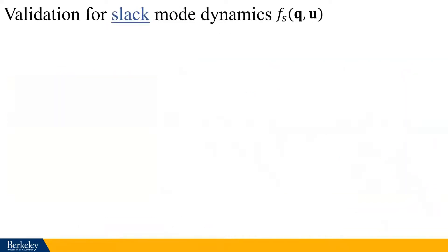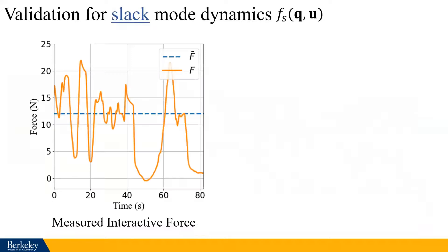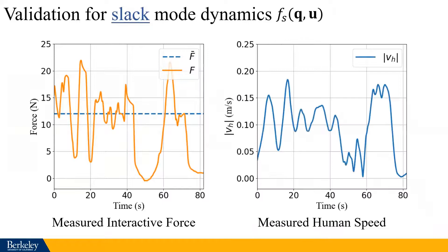What about slack mode dynamics? This is the measured force in the leash during another robot leading human experiments. And this is the measured human speed. As you can see, when the interactive force drops below the threshold, which is 12 newton shown in the dashed line, the human tends to stop moving, such as from 40 seconds to 60 seconds, where the speed of the human is below 0.05 meter per second. Therefore, the assumption that human won't move if the force is near zero can work well in the slack mode dynamics during the experiments.